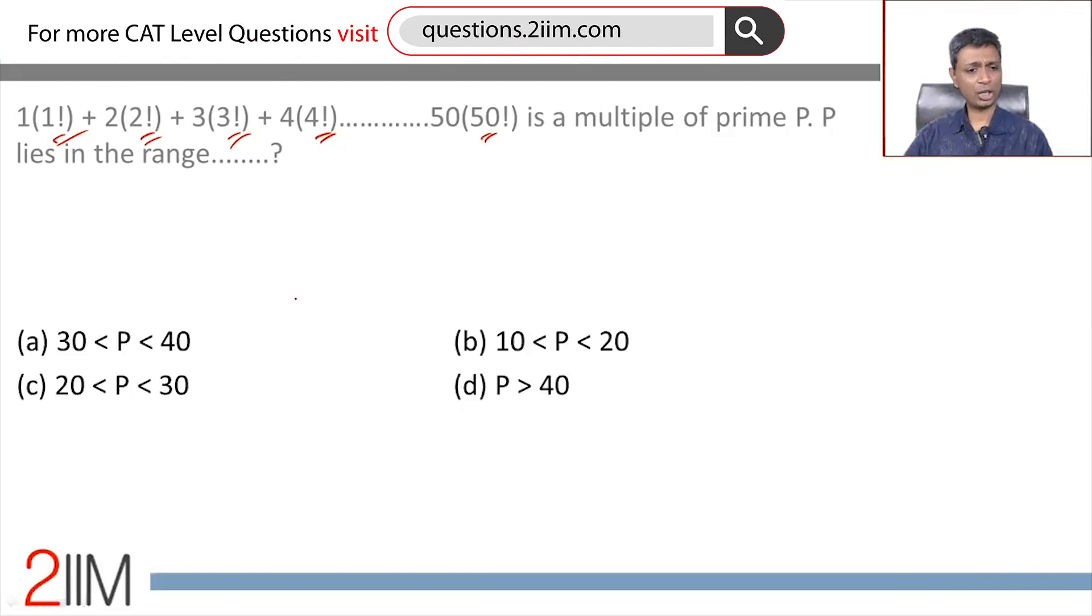p lies in the range 30 to 40, 10 to 20, 20 to 30, more than 40. We don't even know what the starting point is, what are we discussing here?